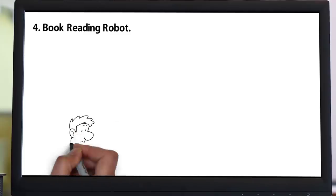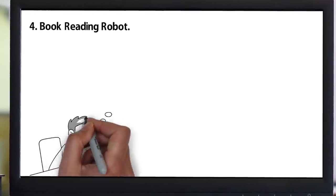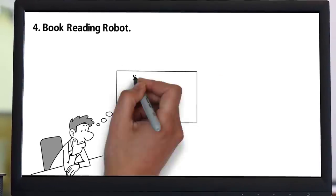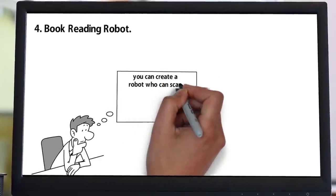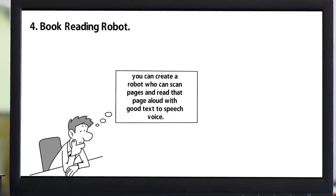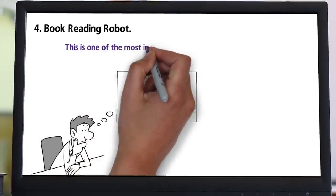Number four: Book reading robot. Many people don't want to read books loudly. Many people are lazy to read books, and old people don't have that much concentration for reading books. So you can create a robot that can scan pages and read that page aloud with good text-to-speech voice. This is one of the most innovative business ideas.